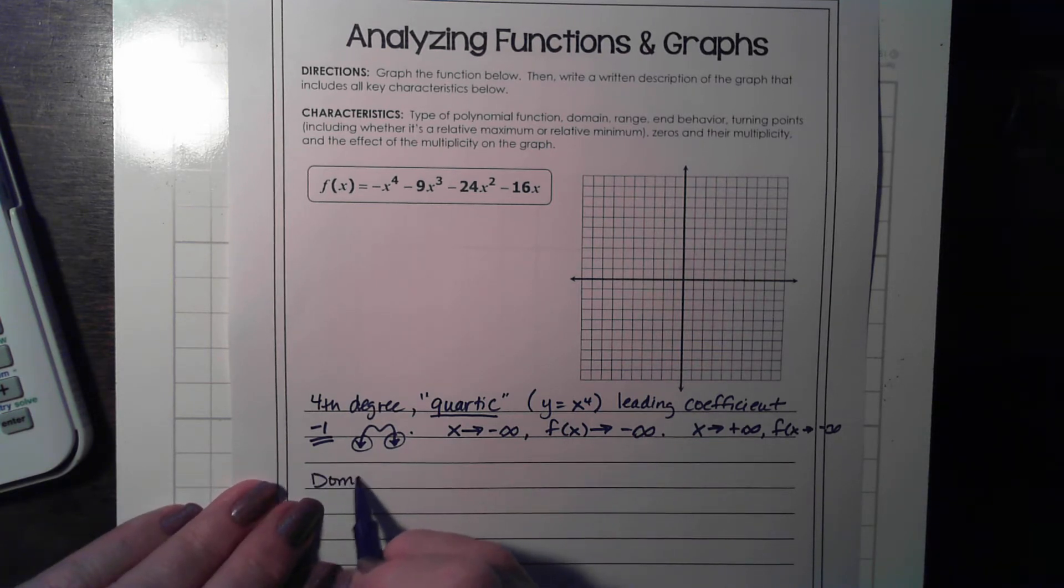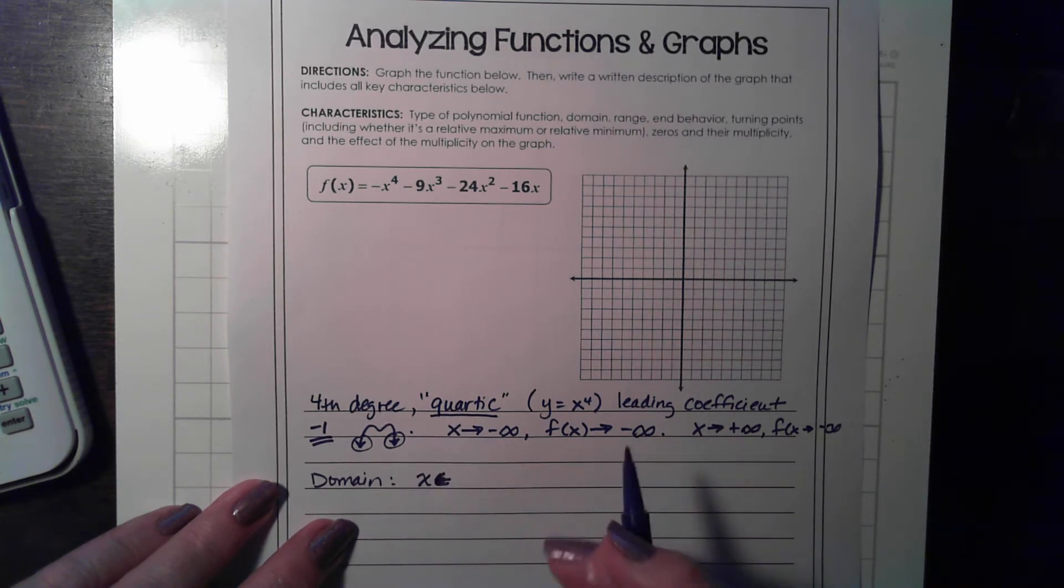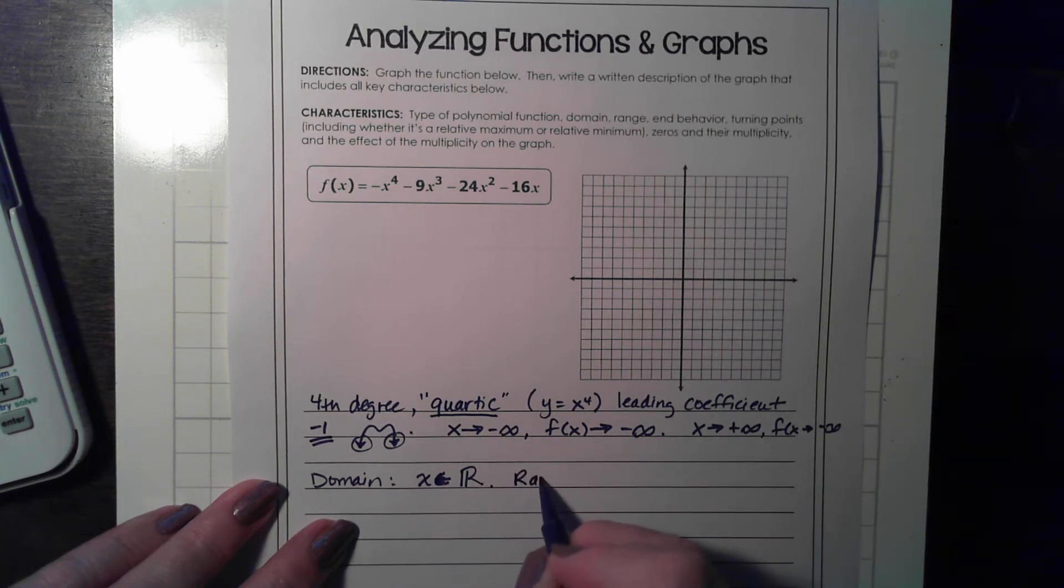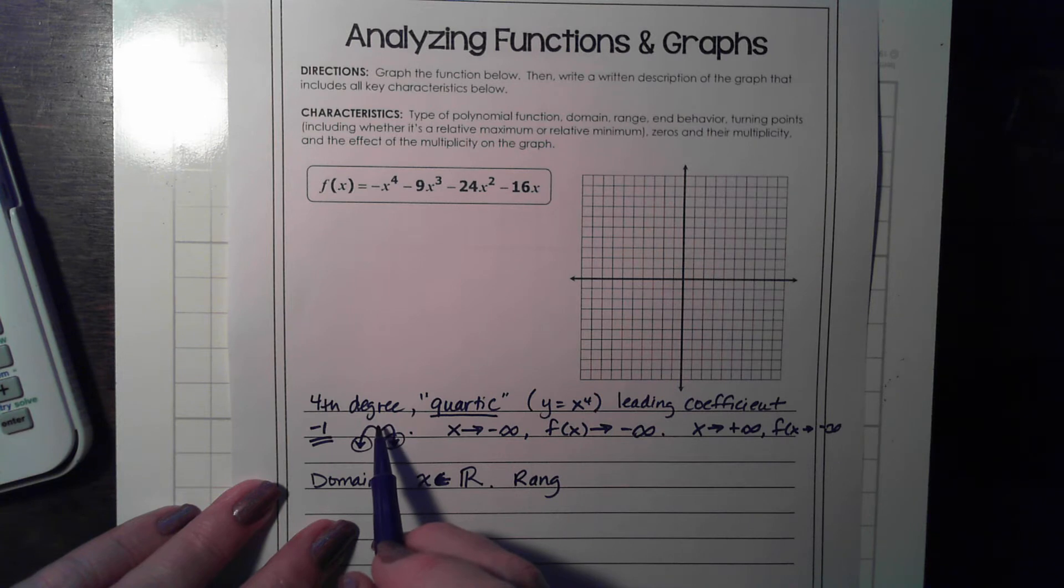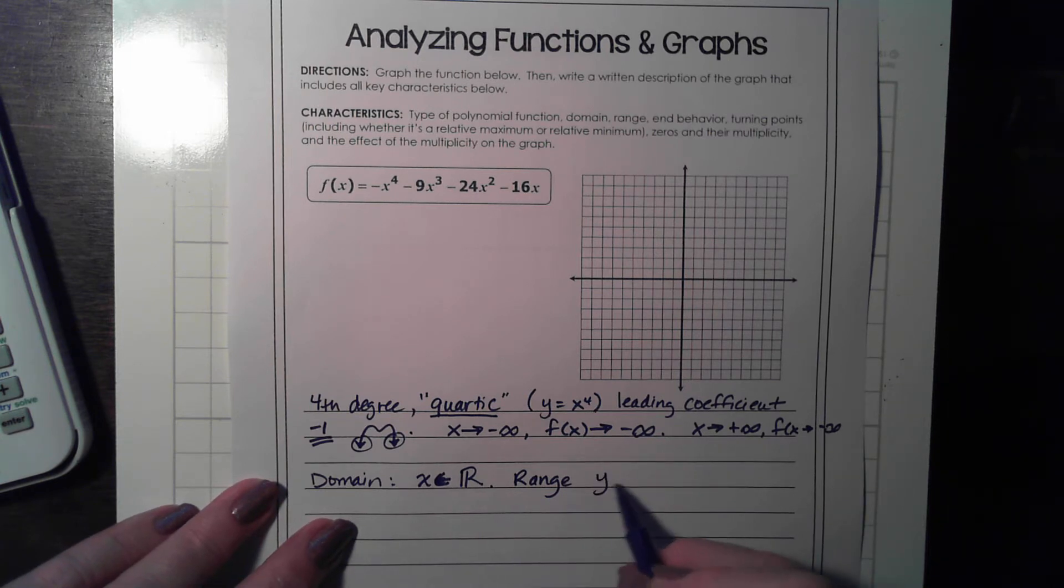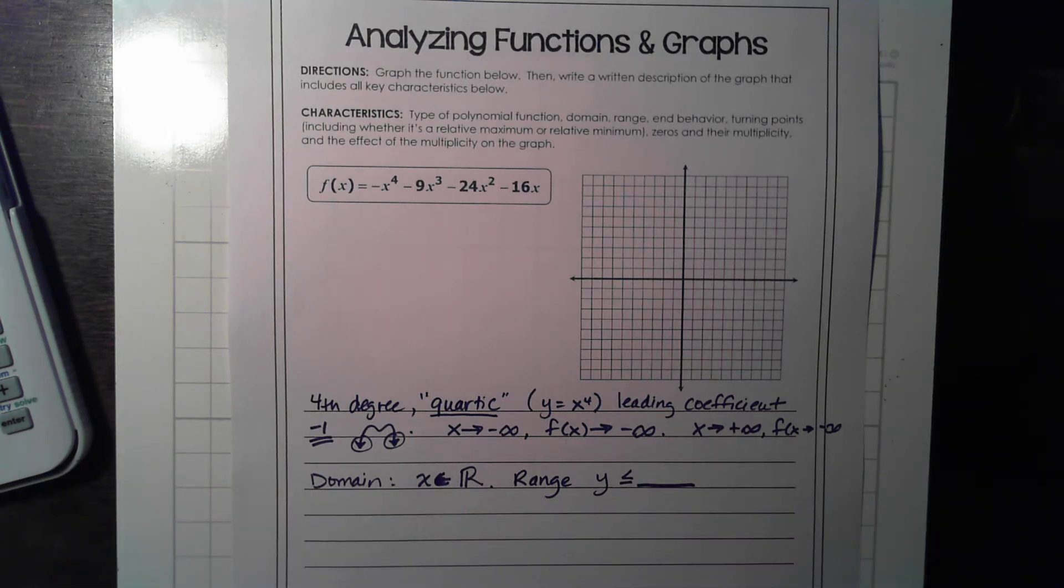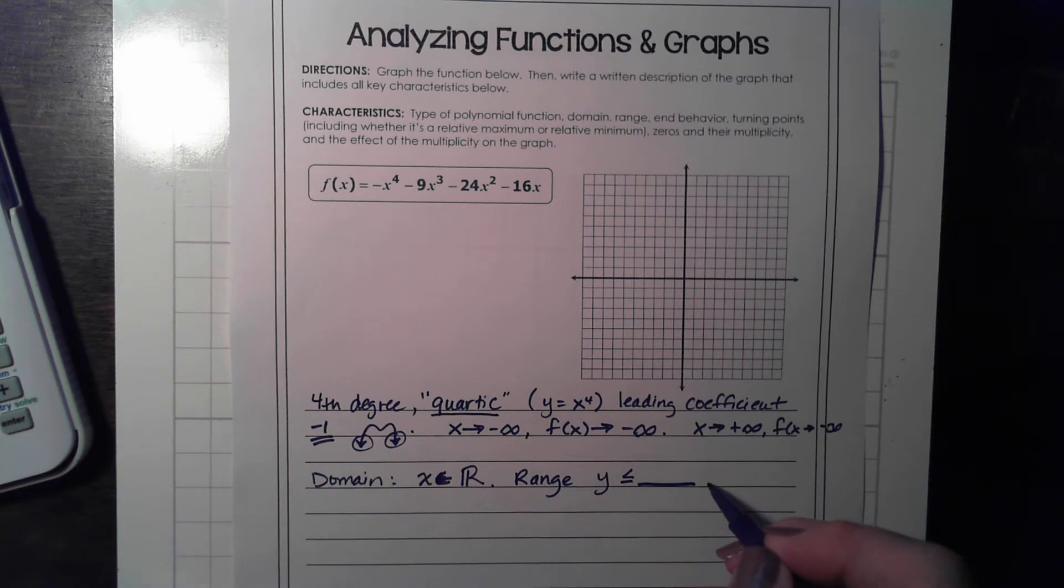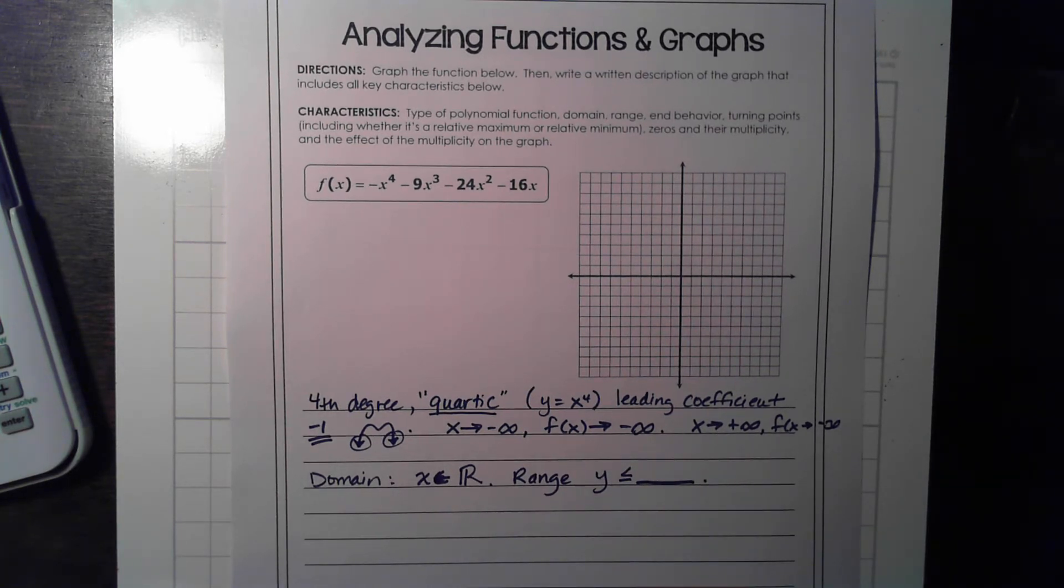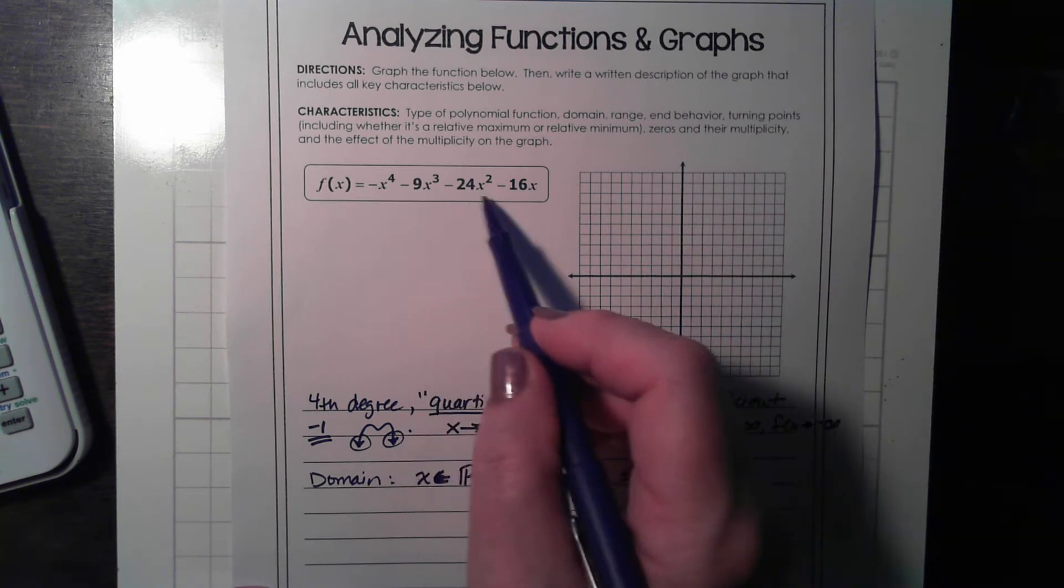The domain, because it's a polynomial, is x belongs to the set of all real numbers. If you just wrote all real numbers, it's fine. The range, well, there's a maximum value for this. It does not go all the way down and all the way up. So we know that it's going to be below. We know that our y's are going to be less than or equal to some value. And that value is going to be the relative maximum in this problem. Actually, it would be called the absolute maximum because it's the highest it ever gets. And this we have yet to figure out. So we're going to leave that as a blank right now.